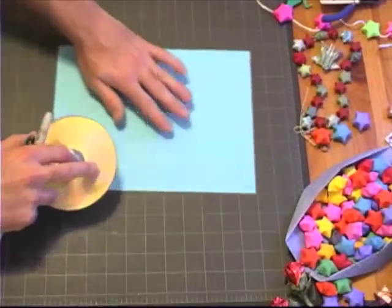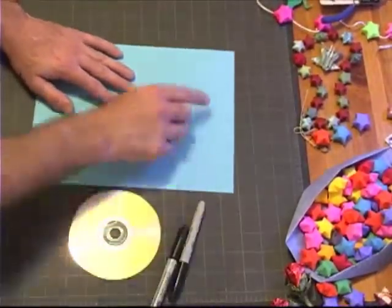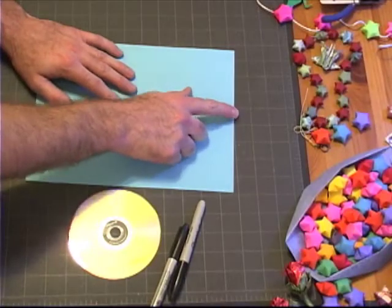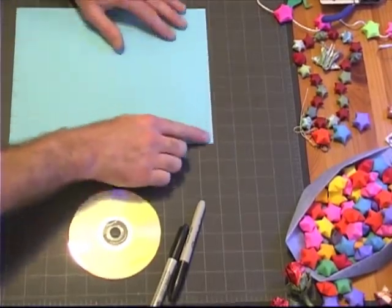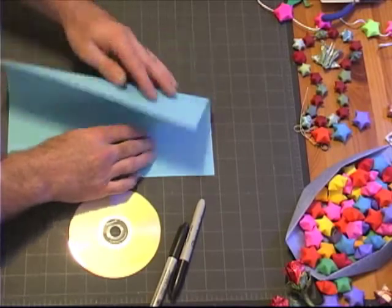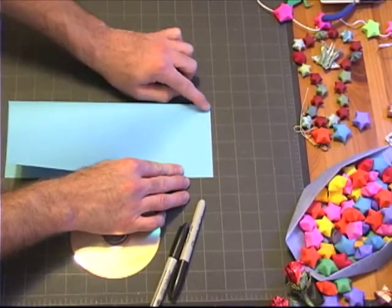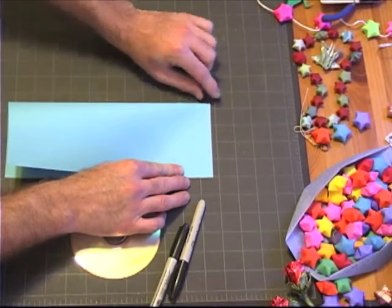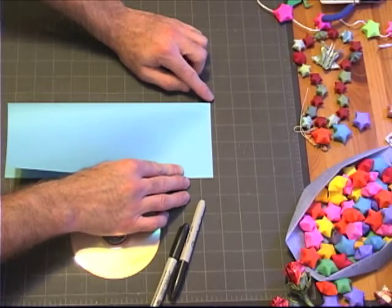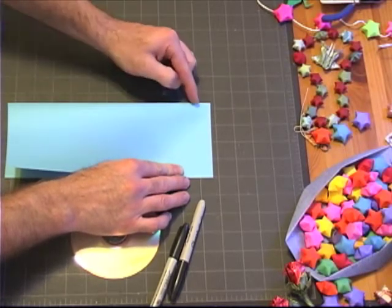The first thing we're going to do is take our piece of paper and locate the center point along the 8.5 inch side. We fold it in half and just pinch the top edge because all we need is this as a marker. We don't need a crease along the paper.